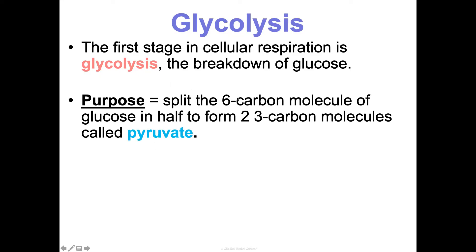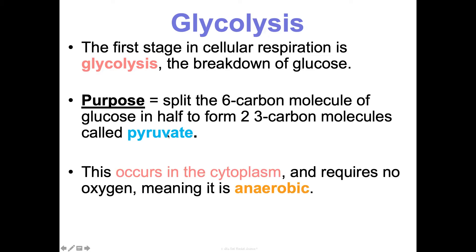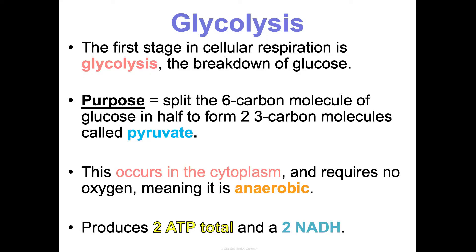The purpose of glycolysis is to split glucose, which is a six-carbon molecule — C6H12O6 — into two three-carbon molecules called pyruvates. This occurs in the cytoplasm, so it's outside of the mitochondria. It doesn't require any oxygen, so we say it's an anaerobic process. It charges up four ATPs with energy but takes two ATPs to run the process, so it's a net of two ATPs total, and then two NADHs.